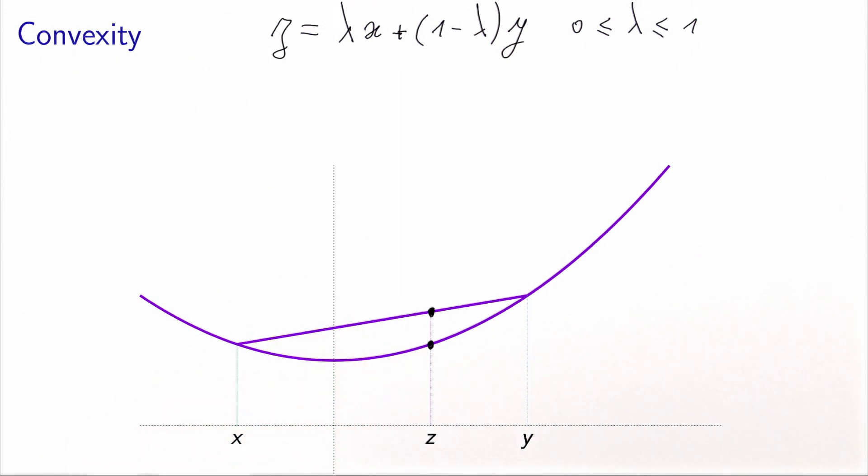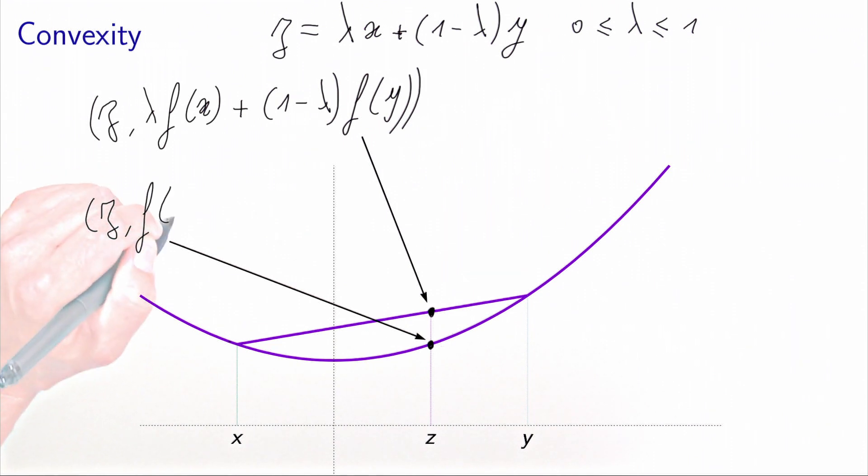So what is the above point? The above point has coordinate z for the x coordinate, and for the y coordinate, it is a linear combination between the altitude f of x and the altitude f of y. So actually, we can write it as lambda f of x plus 1 minus lambda f of y. So this is this point. And what is this point? This point is at coordinate z, f of z.